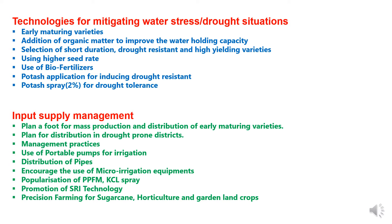There should be promotion of different technologies for rice cultivation and sprays like potassium chloride solutions to increase the capacity of the crop to withstand drought conditions. Precision farming should be recommended for sugarcane, horticulture, and garden land crops.